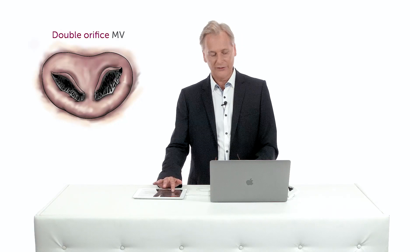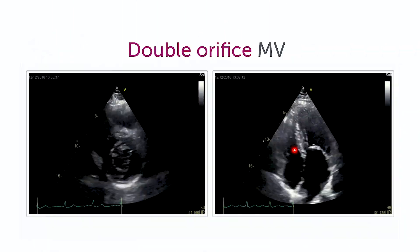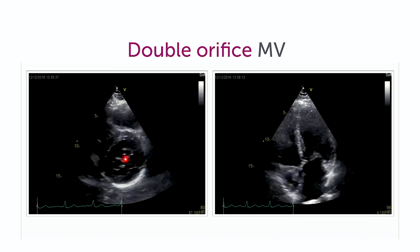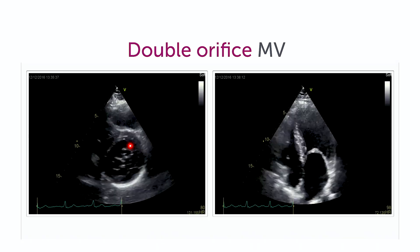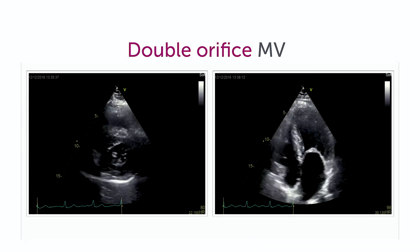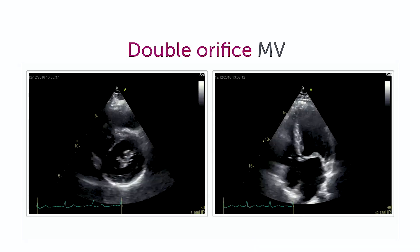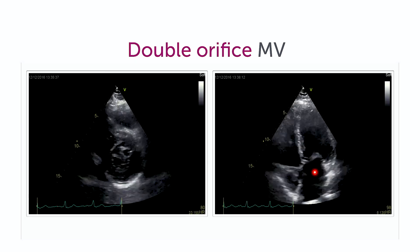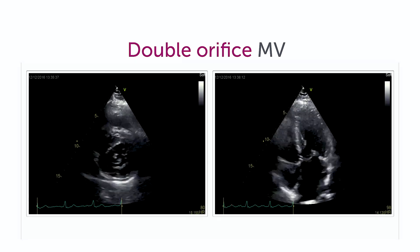The next pathology is a congenital abnormality of the mitral valve — for example, the so-called double orifice mitral valve. It looks very much like rheumatic mitral stenosis, only it's a congenital problem where you have two orifices. The hemodynamic problem is very similar: it's obstruction, it's stenosis. This causes an increase in left atrial filling pressures and again post-capillary pulmonary hypertension which can affect the right heart.